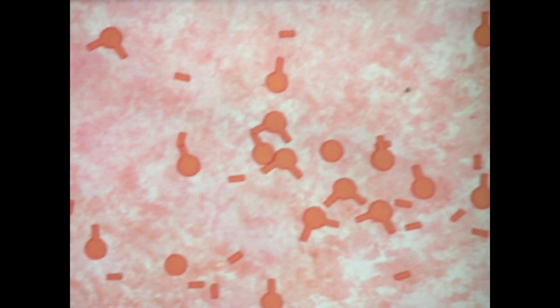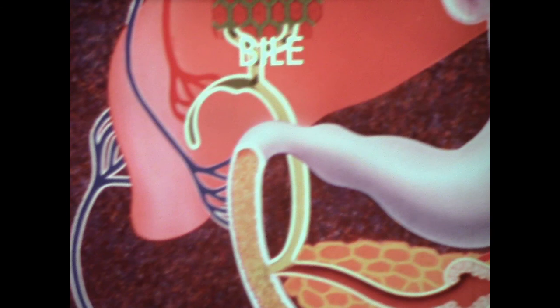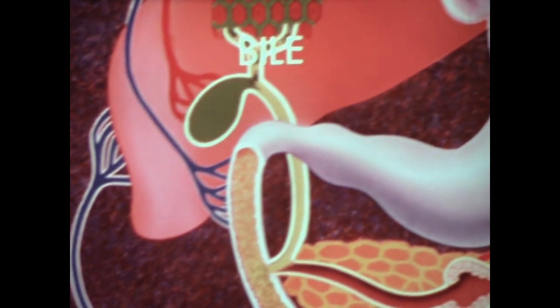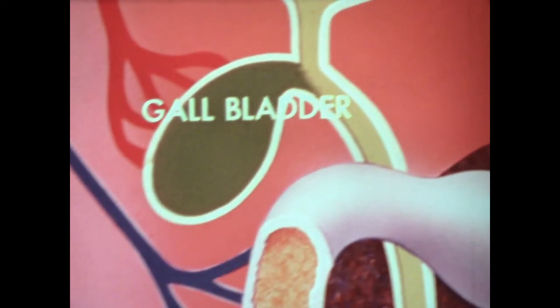But the digestion of fat can be carried out much more efficiently with the help of another substance, bile. Bile is a complex fluid formed continuously by specialized cells in the liver. Between meals, some of this fluid is stored and concentrated in a sac-like container known as the gallbladder.